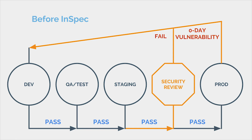Historically, compliance and security have been afterthoughts to the development and operations of a system or environment. In this diagram, we see the typical treatment of testing and security where the development and operations teams do their things, and then before sending everything to production, it all gets tested in a big batch. If there are any issues, everything goes back to stage one of the process and waits until that last step before production to be tested again. It's a process that works until it doesn't, and it definitely breaks down when zero-day vulnerabilities are announced.